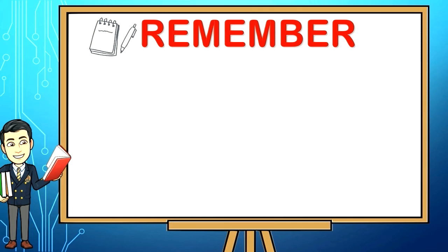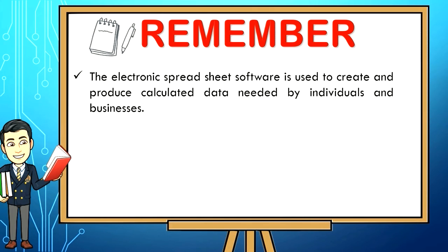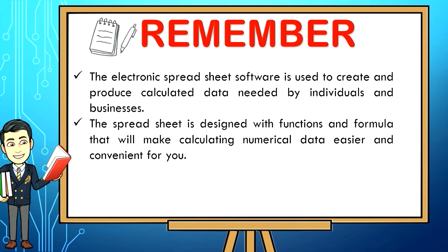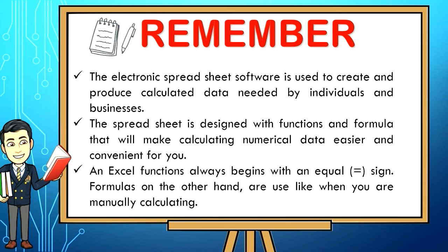Remember, the electronic spreadsheet software is used to create and produce calculated data needed by individuals and businesses. The spreadsheet is designed with functions and formula that will make calculating numerical data easier and convenient for you. An Excel function always begins with an equal sign. Formulas, on the other hand, are used when you are manually calculating.